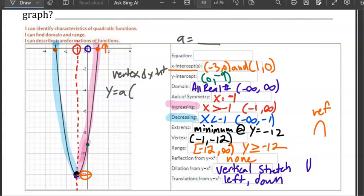y equals a(x - h)² + k. So the vertex was negative 1 comma negative 12, that's your h and that's your k. And your y-intercept was 0 comma negative 9, that's going to be your x and your y.